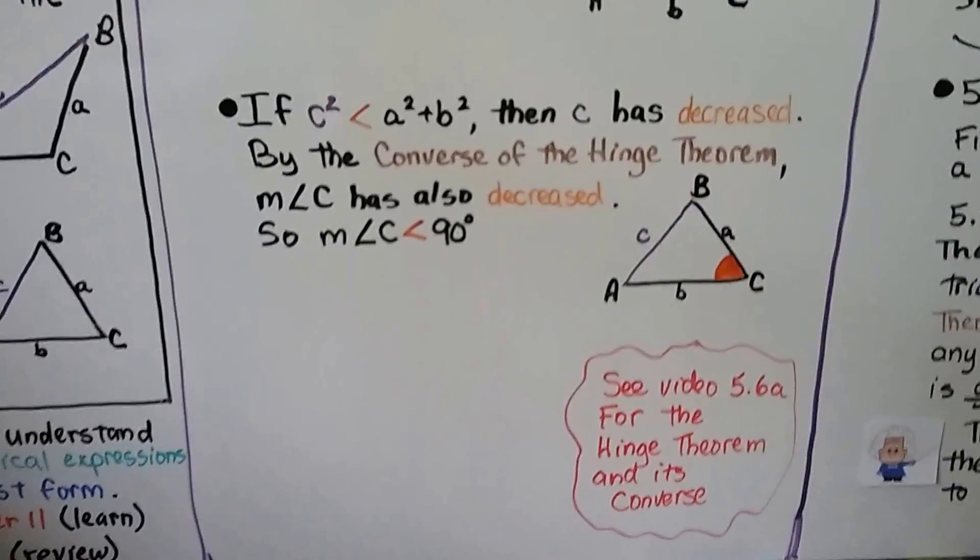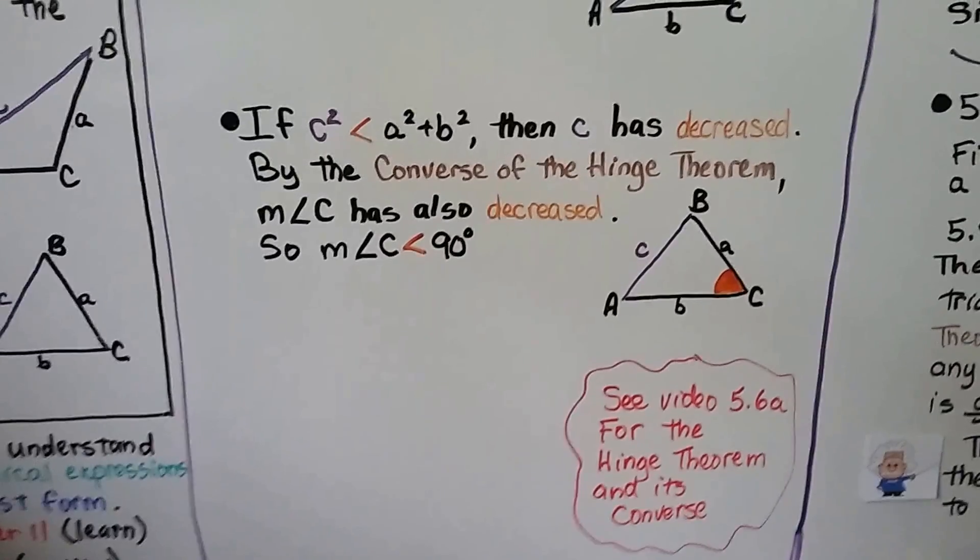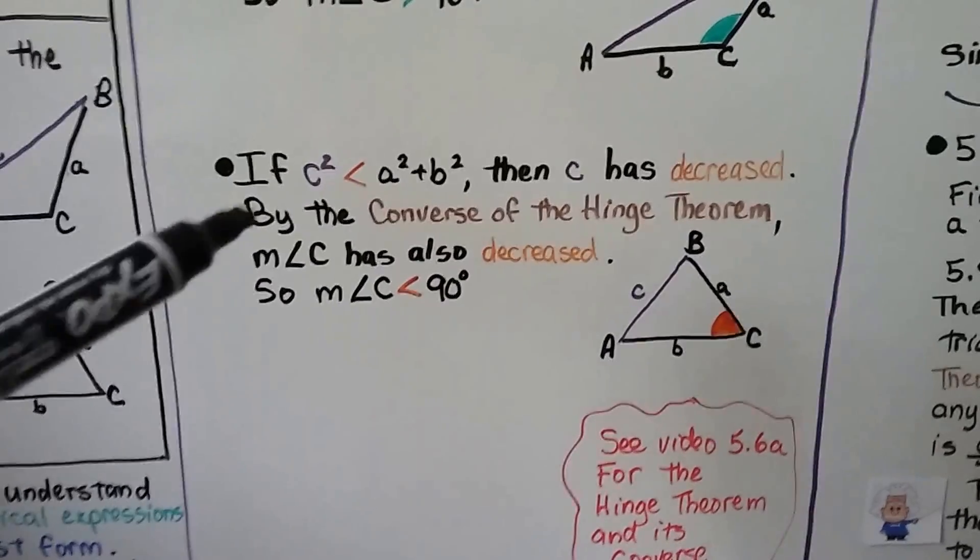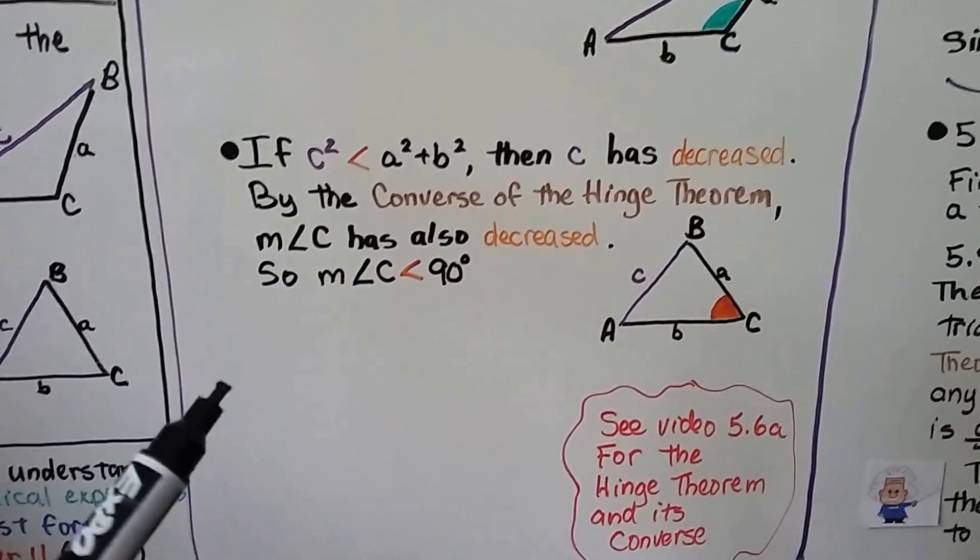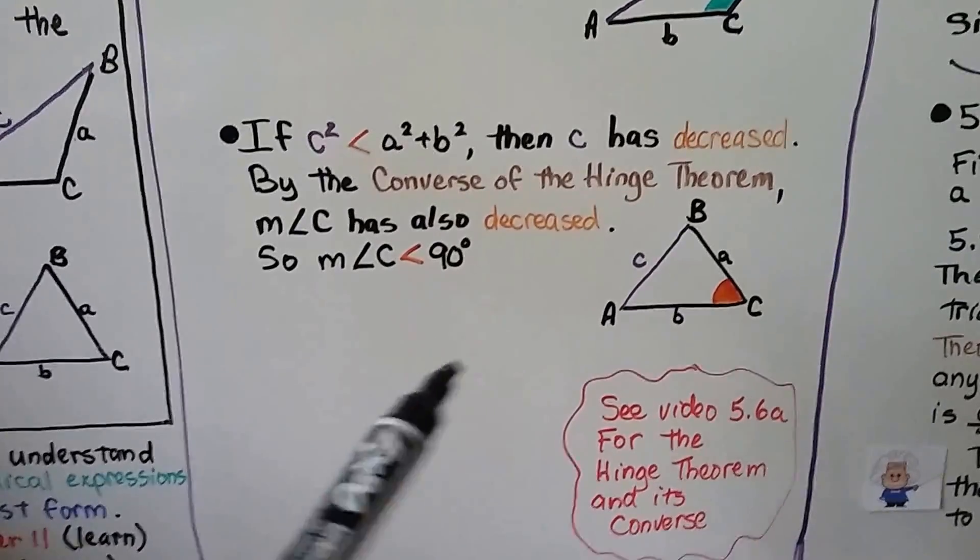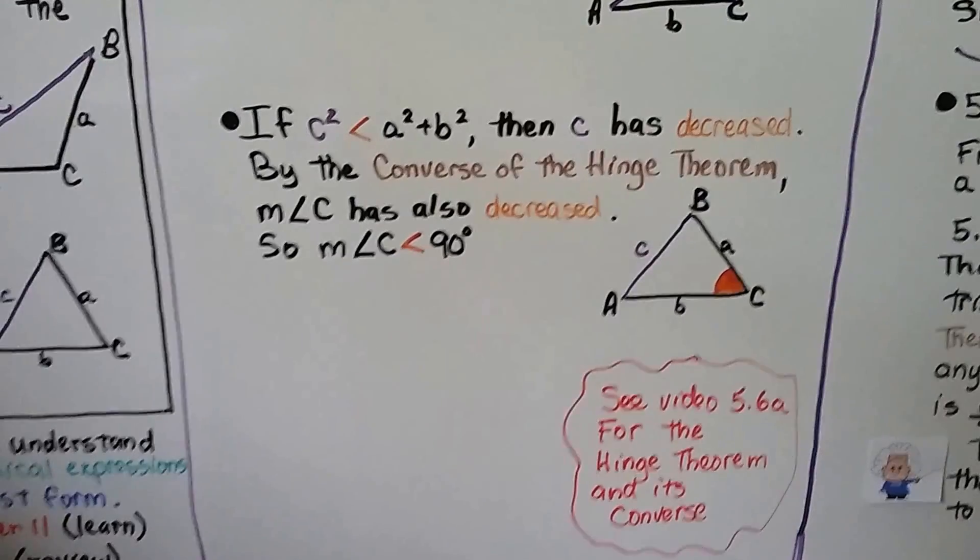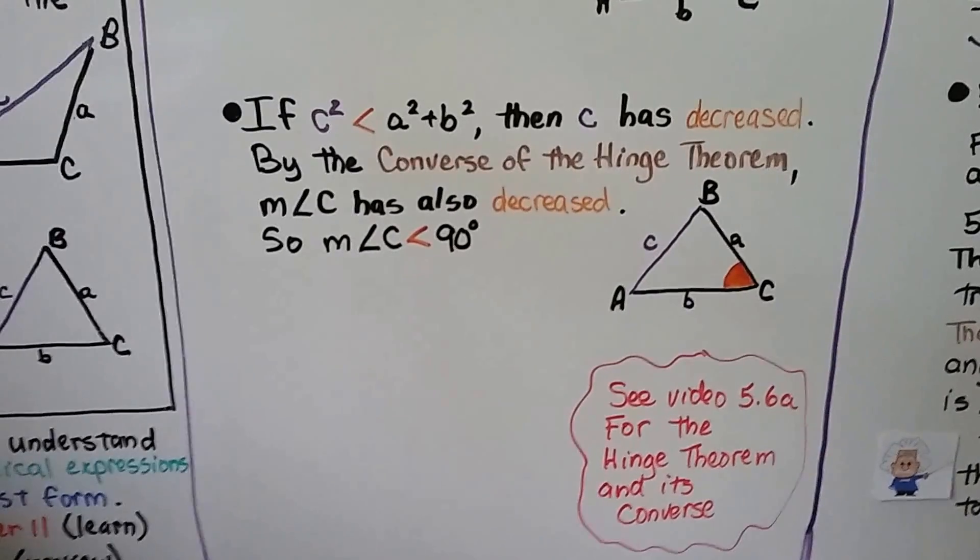Similarly, when c² < a² + b², the measure of angle C is less than 90 degrees.